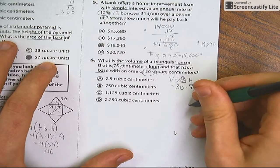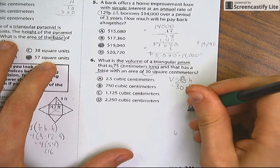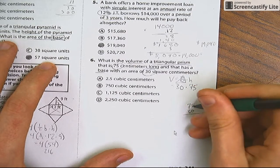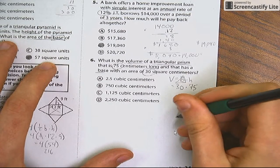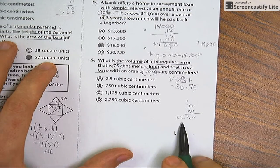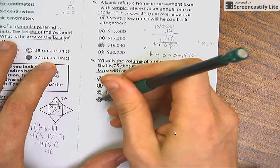Okay. So let's do 75 times 30. Zero. And then three times five is 15. Three times seven plus one is 22. So it's 2,250 cubic centimeters.